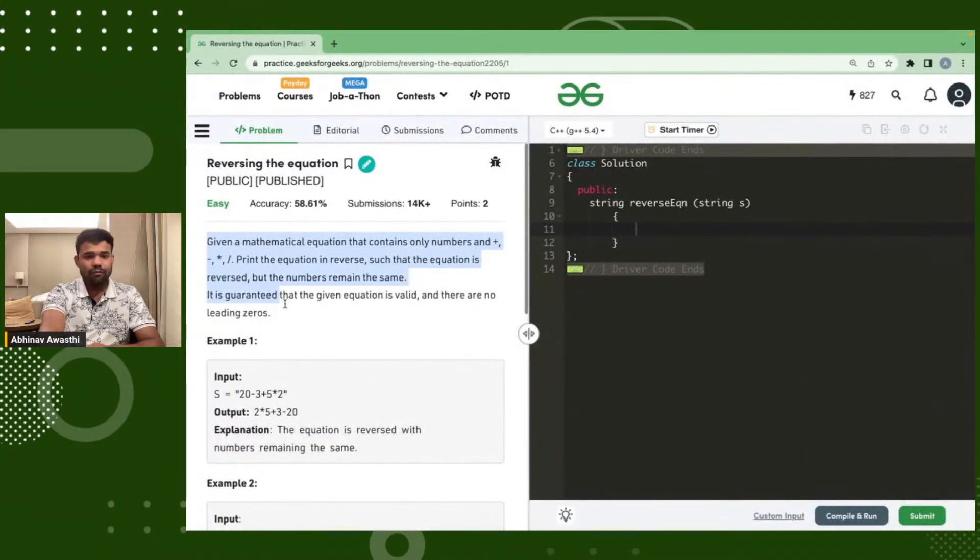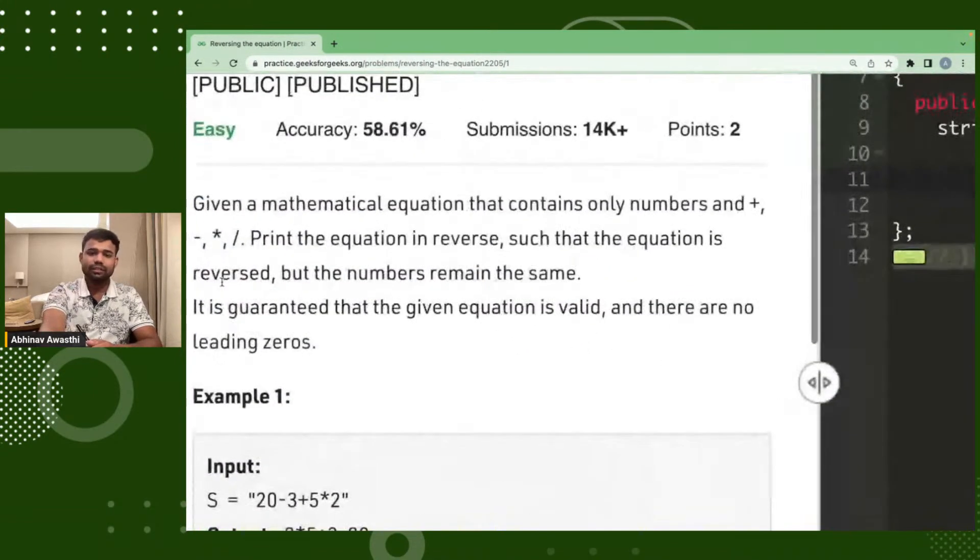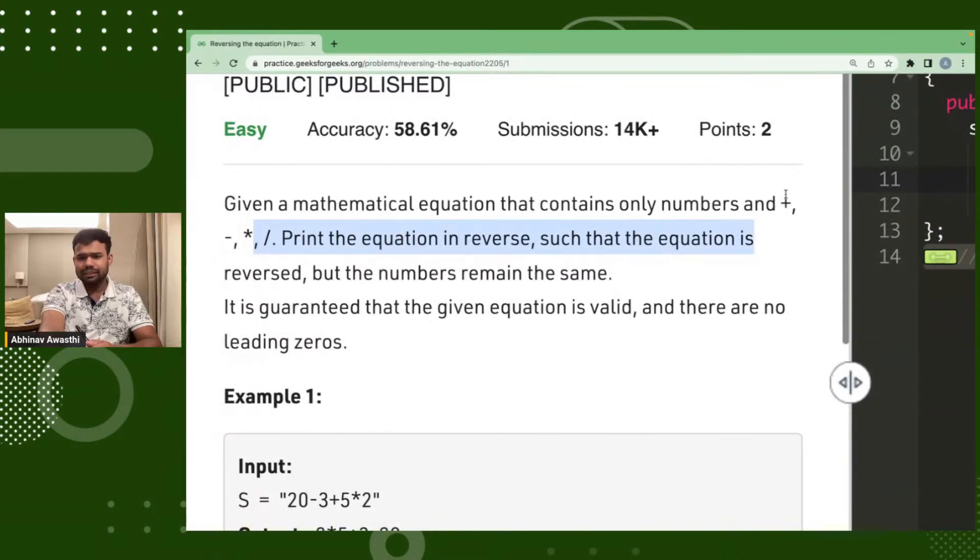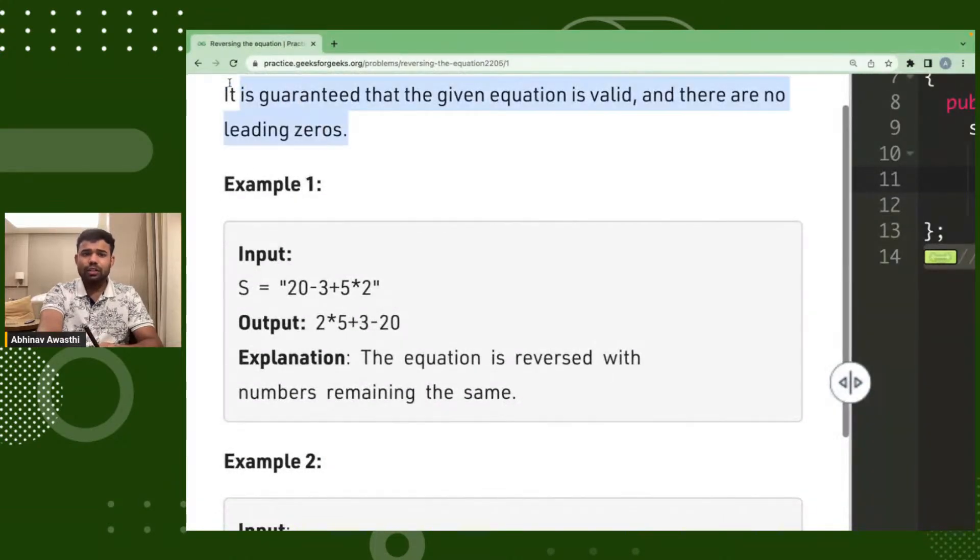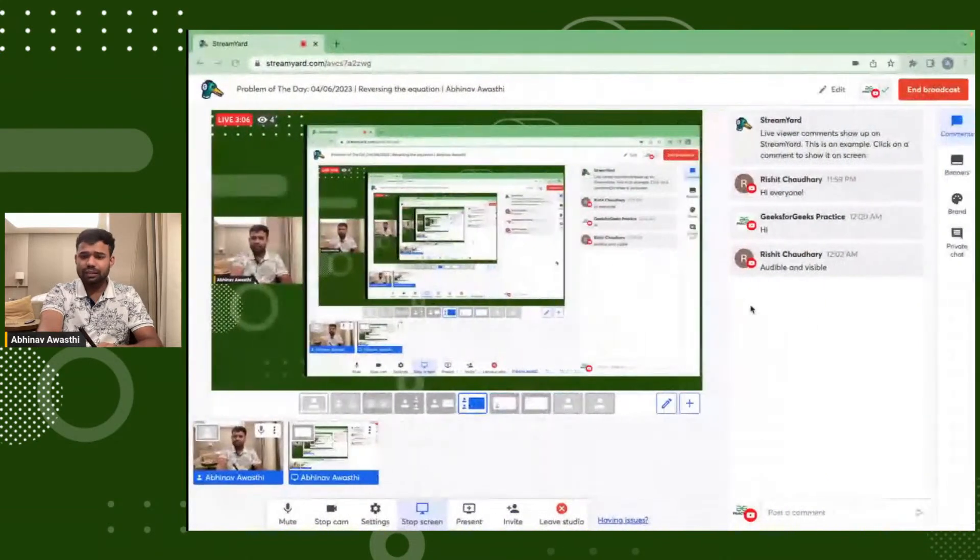The problem says that given a mathematical equation that contains only numbers and some symbols - addition, subtraction, multiplication, division - we have to print the reverse equation such that the equation got reversed, but the numbers should remain same. And there are no leading zeroes. So that's the basic thing that they are asking.